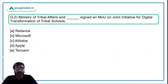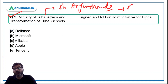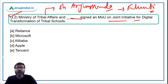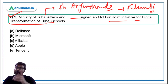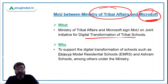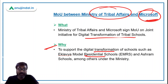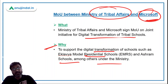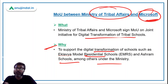Moving to question number two — the Ministry of Tribal Affairs, headed by Shri Arjun Singh Munda whose Lok Sabha constituency is Khunti in Jharkhand, signed an MOU on a joint initiative for digital transformation of tribal schools between the Ministry of Tribal Affairs and a company. You have to fill this blank. The company is Microsoft. This MOU will support the digital transformation of schools such as Eklavya Model Residential Schools and Ashram Schools under the Ministry.